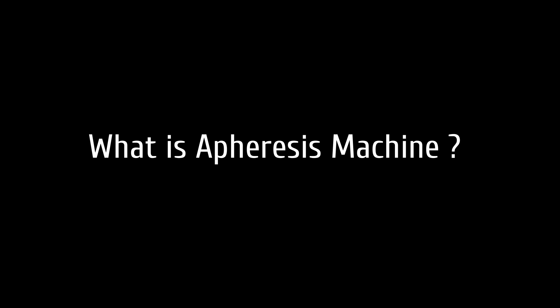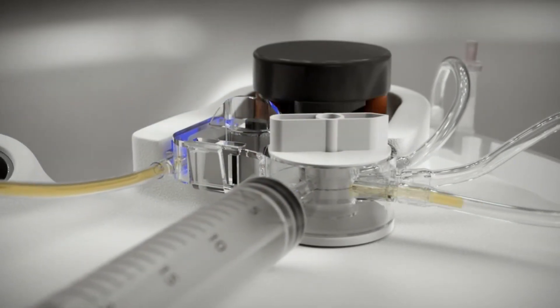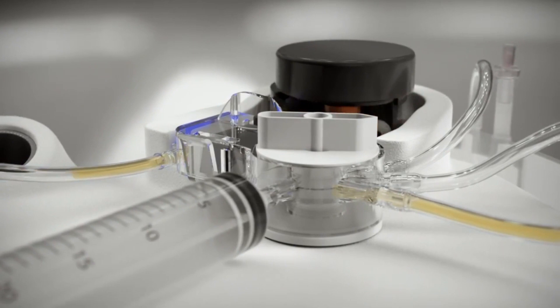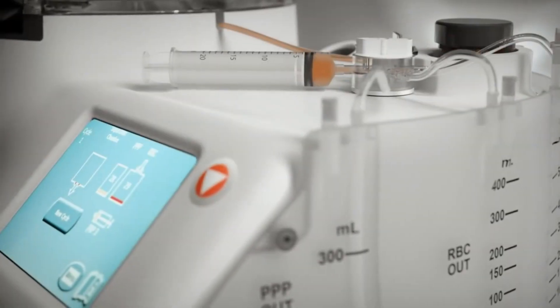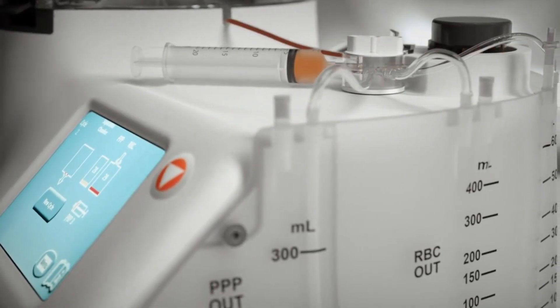Let's know what the apheresis machine is. An apheresis machine is a device which receives blood removed from a patient or donor's body and separates it into its various components: plasma, platelets, white blood cells, and red blood cells.